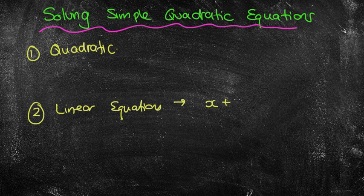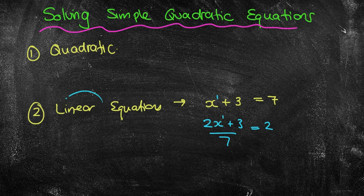They're things like x plus 3 equals 7. And you'll notice that all the equations that we've done, we've had x, or the unknown, has always just been to the power of 1. Even if it was like 2x plus 3 over 7 equals 2, it was always x to the power of 1. That is what we refer to as linear.